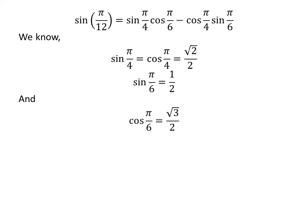We know sine of pi upon 4 is equal to square root of 2 upon 2, and also cosine of pi upon 4 is equal to square root of 2 upon 2. We also know the value of sine of pi upon 6 is equal to half, and cosine of pi upon 6 is equal to square root of 3 upon 2.